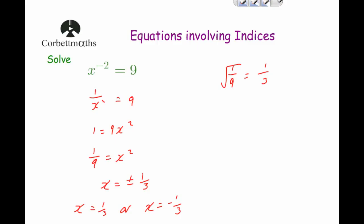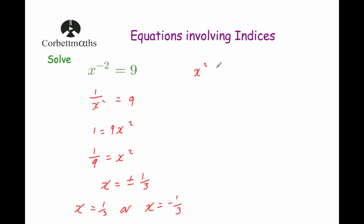There was also a slightly different approach for that question. Instead of writing 1 over x squared first, we could have taken the reciprocal of both sides to begin with to get rid of the negative sign. So we'd get x squared equals 1 ninth directly, then square root both sides — remembering to take the positive or negative solution.